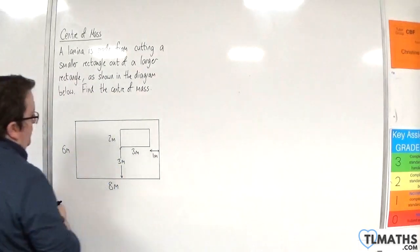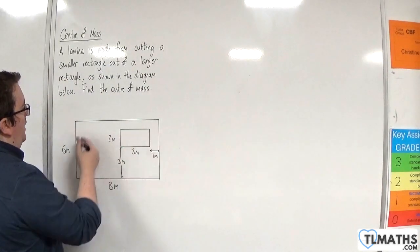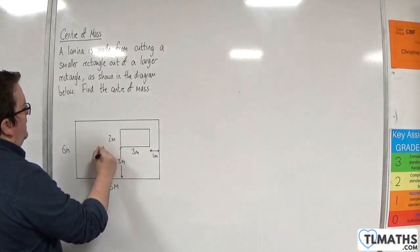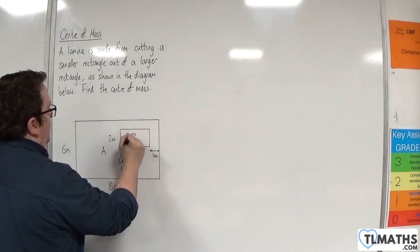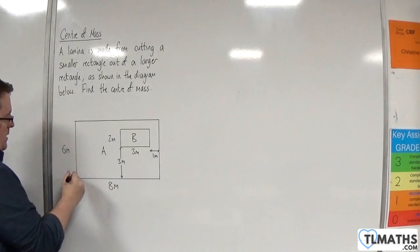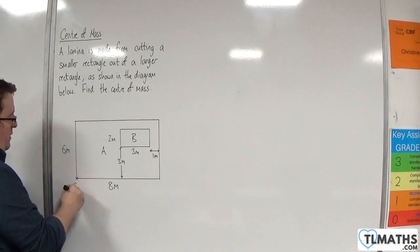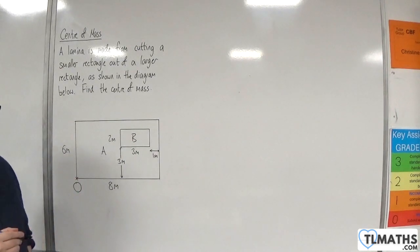So, what we'll do is we will call the large rectangle, rectangle A, and the rectangle that's been cut out, we're going to call that rectangle B. And we're going to measure the origin here at the bottom left-hand corner.